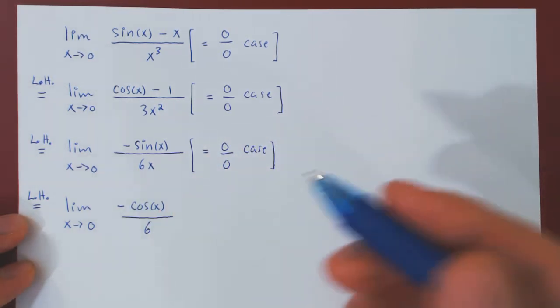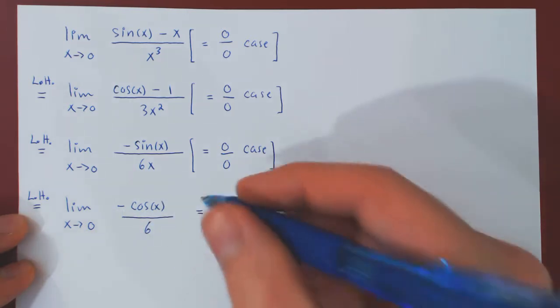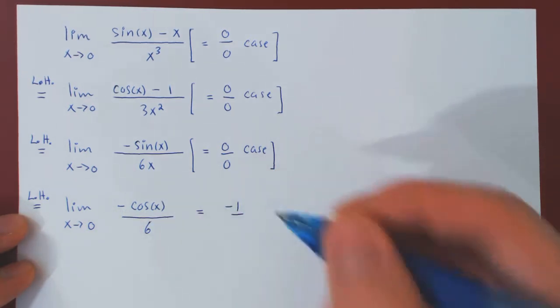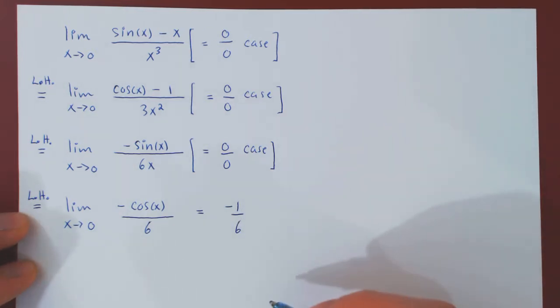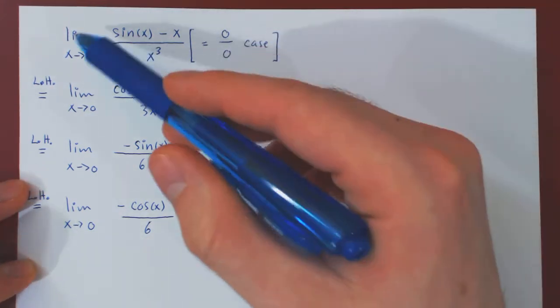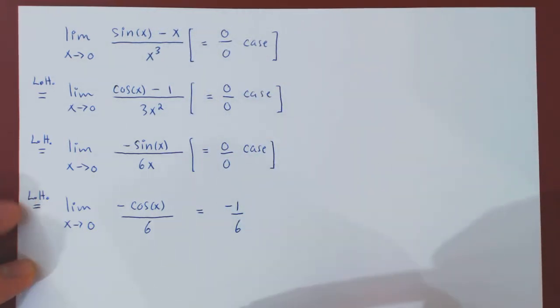And now we have a trivial limit. As x goes to 0, cos(x) will approach cos(0), which is 1, so we'll get negative 1 on the numerator, over, 6 is a constant, so it remains 6. And so you see that the limit as x goes to 0 of sin(x) minus x over x cubed is equal to negative 1 over 6.